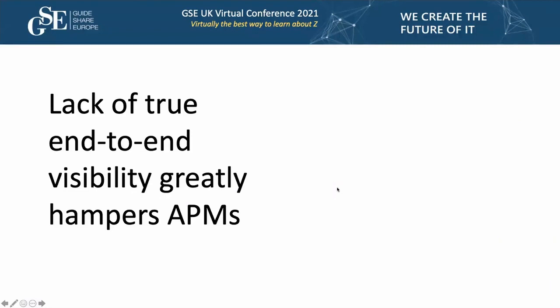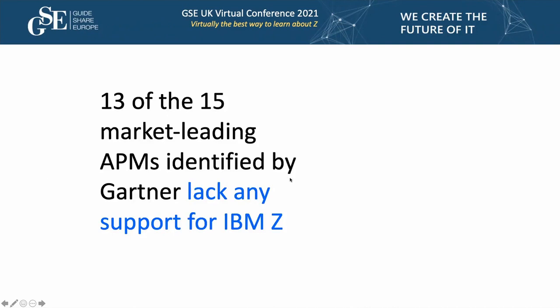APM solutions are great, especially for cloud application owners, and they make a huge difference. But this session is about creating unity between APM users and Z teams. Unfortunately, one of the most pervasive problems in the APM space is the lack of visibility for IBM Z. Roughly 13 of the 15 market-leading APMs that Gartner calls out in their quadrant lack any support whatsoever for IBM Z. So even though businesses may have invested millions of dollars to instrument their entire application, they may be missing a really critical piece of the puzzle.